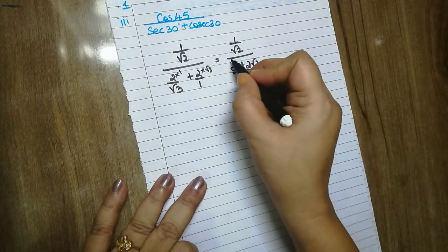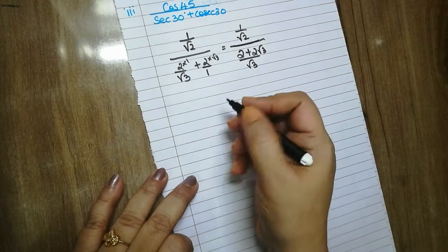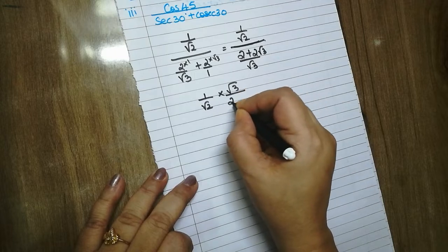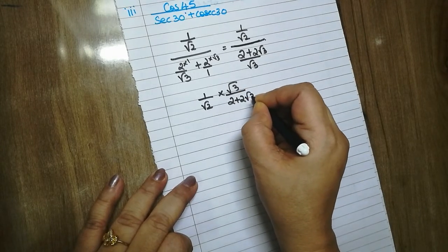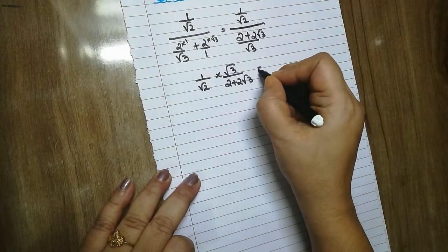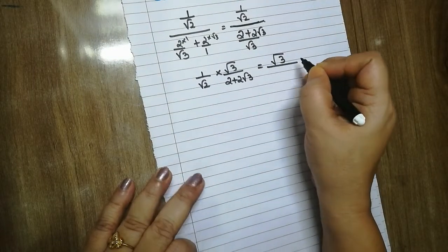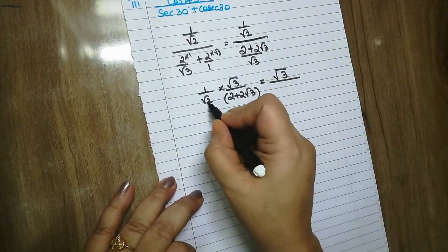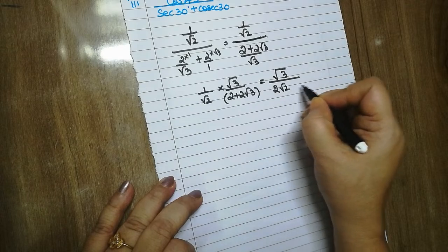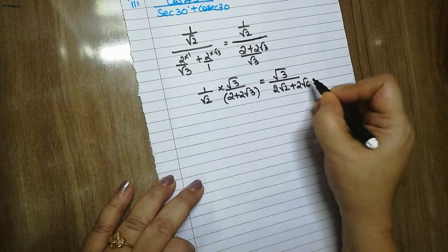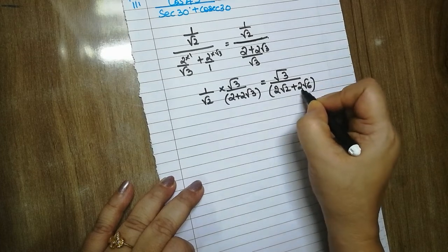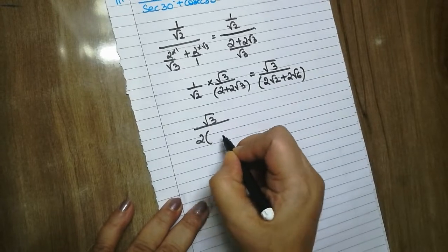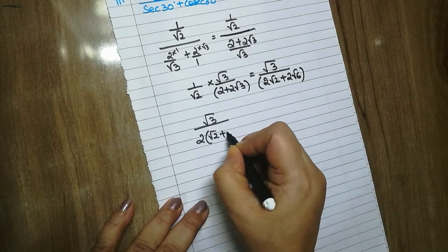Now at the main division line, we take the reciprocal: 1/√2 multiplied by √3 divided by (2 + 2√3). Multiplying this out — put a bracket here for the binomial — this becomes 2√2 + 2√6. We take 2 as a common factor, which reduces our work. So it becomes √3 divided by 2, with (√2 + √6) factored out.